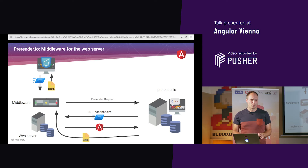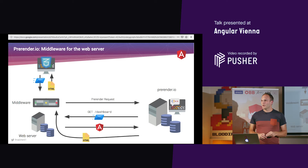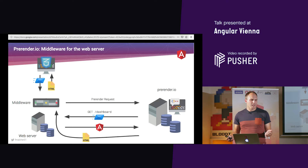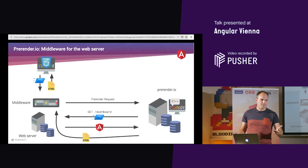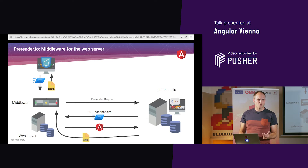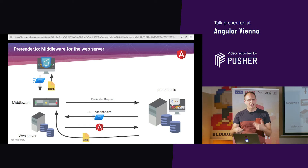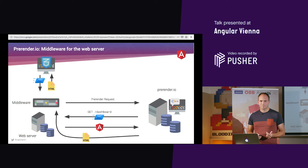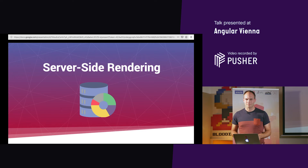Prerender.io is a great solution because it's so easy, and you can use it with any framework — React, Vue, jQuery, AngularJS, whatever. But I want something more Angular-involved where I have control over what happens. I want to render things on the server with full control over the infrastructure. That's where proper server-side rendering comes in — prerender.io is always a fallback if nothing else works.